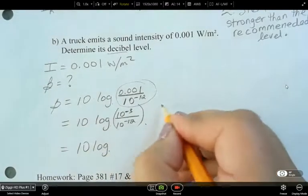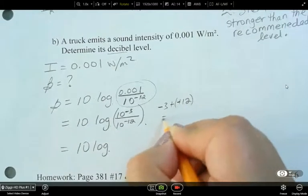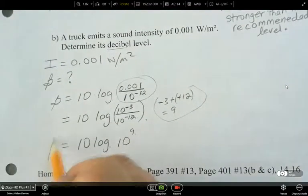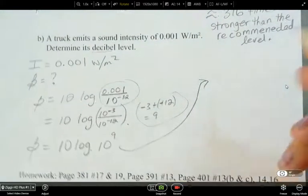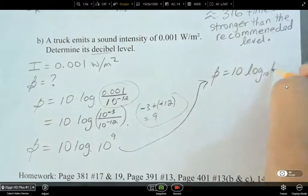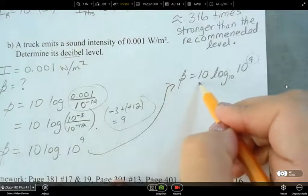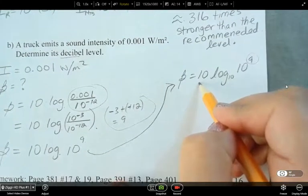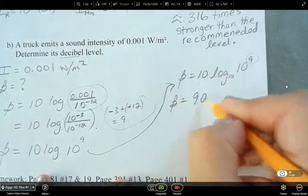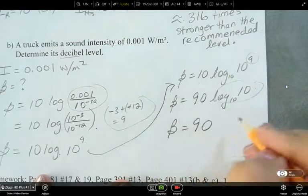So let's just kind of think here. Negative 3 minus negative 12. So that's 9. So 10 to the power of 9. I'm going to finish it up here. So I've got beta equals 10, and then log 10 to the power of 9. What can you tell me we could do here with this, what log law? Remember those laws that we learned earlier? Bring the exponent down. So the exponent we can bring down. So we've got 90, and then log 10 base 10. What's 10 base 10? 1. So 90 decibels.